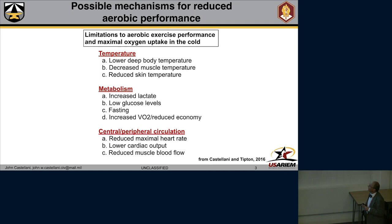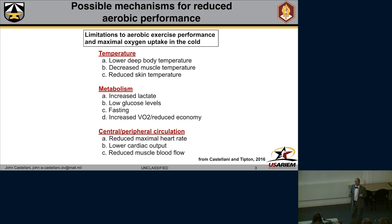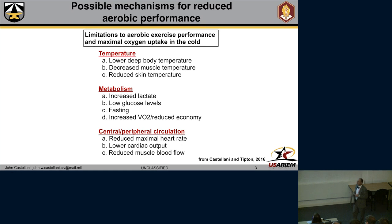A couple of years ago, Mike and I had the opportunity to survey the literature in a paper in Comprehensive Physiology, and we basically put together a list of possible mechanisms that may limit aerobic performance. An important one is a change in temperature — lower deep body temperature, as well as a decrease in muscle temperature, and also the possibility of a reduced skin temperature. For metabolism, there are different potential mechanisms, including maybe an increase in anaerobic metabolism. And finally, one of the major effects may be a change in central or peripheral circulation.